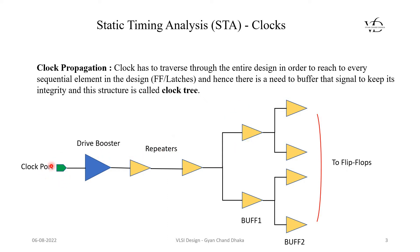Why do we need this clock tree? If the clock signal directly connects to each and every flip-flop, due to interconnect delays the clock signal's rise time and fall times will increase. In order to maintain clock signal integrity — keeping it close to the ideal clock signal — we need to insert these buffers to boost the drive strength of the signal. This kind of structure with drive boosters, repeaters, and buffers is called a clock tree.